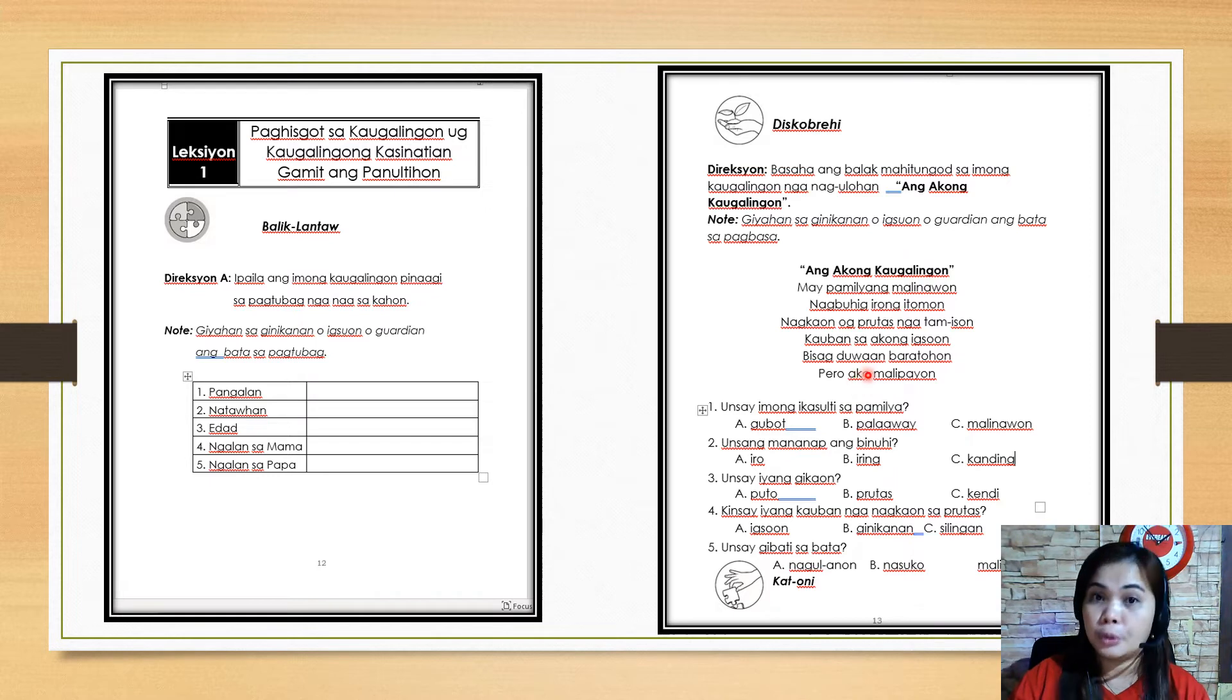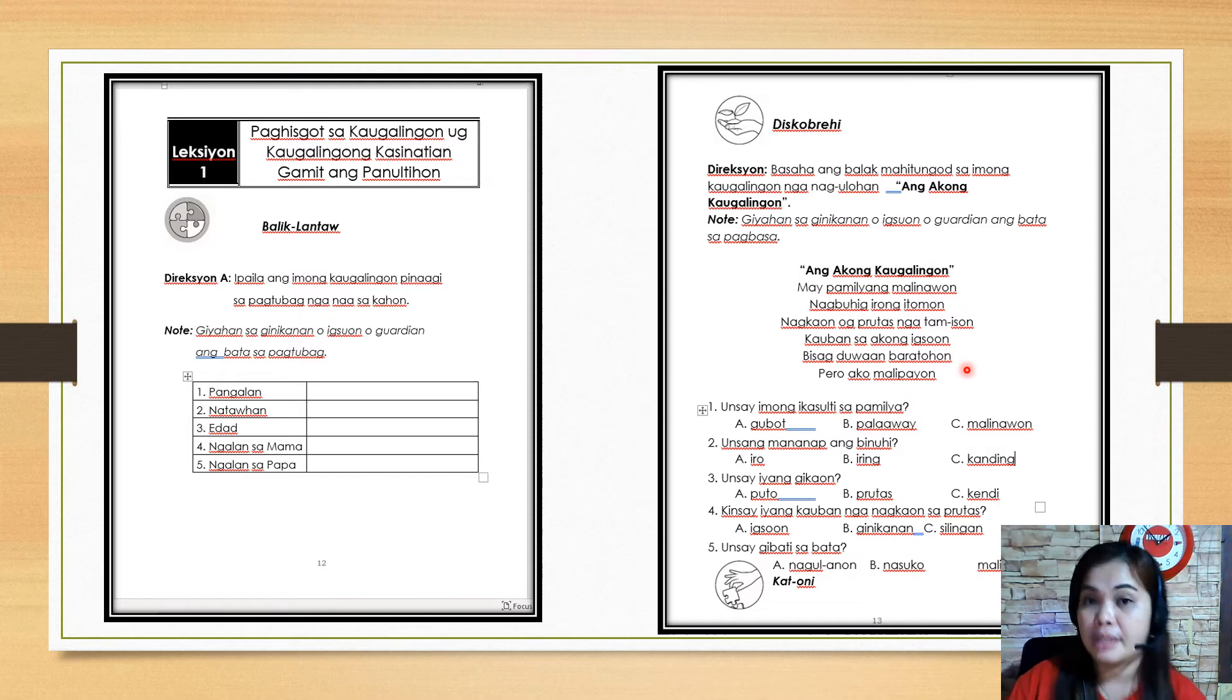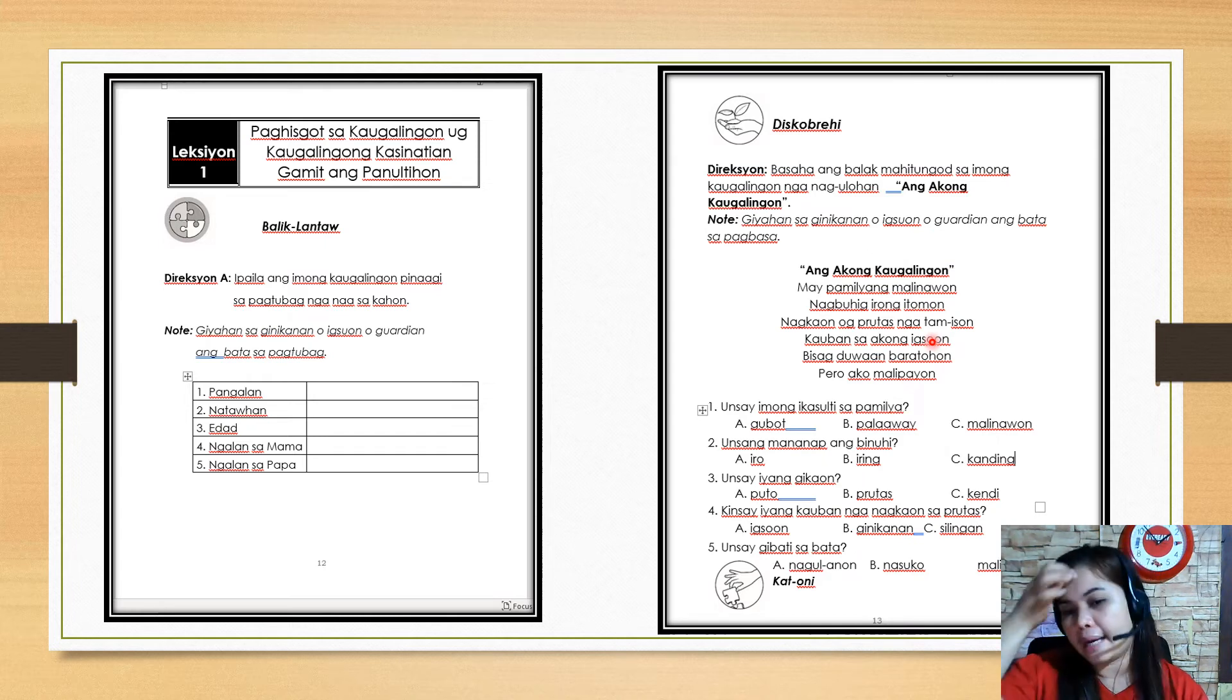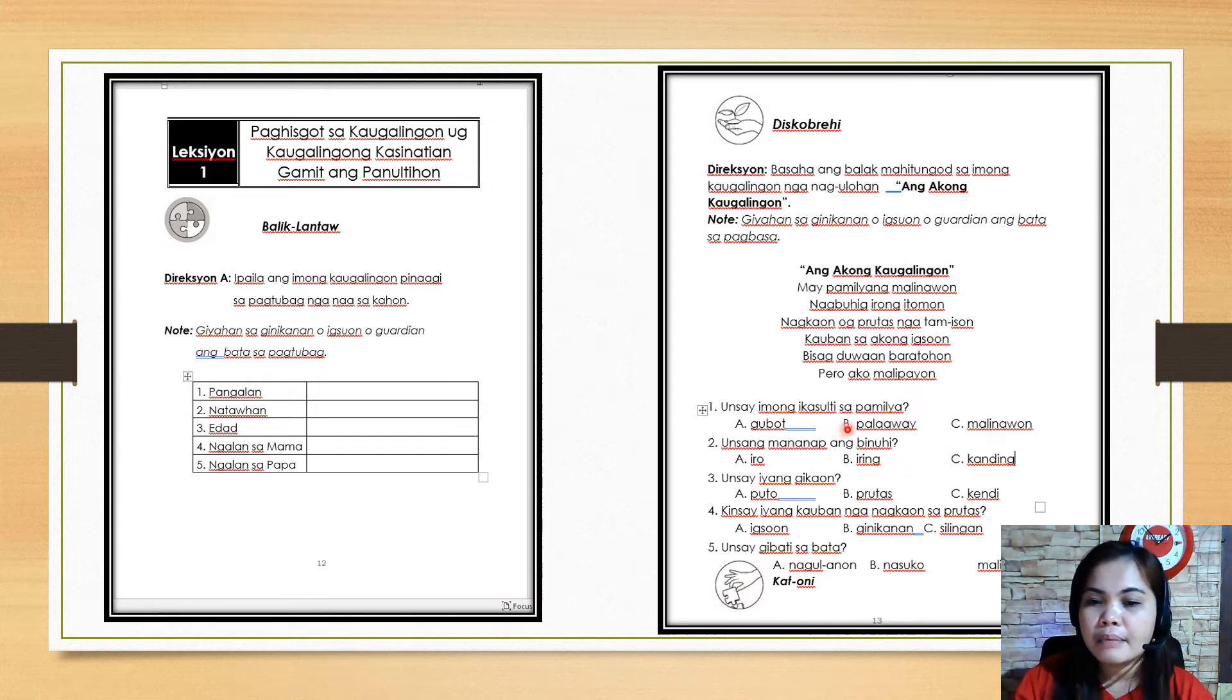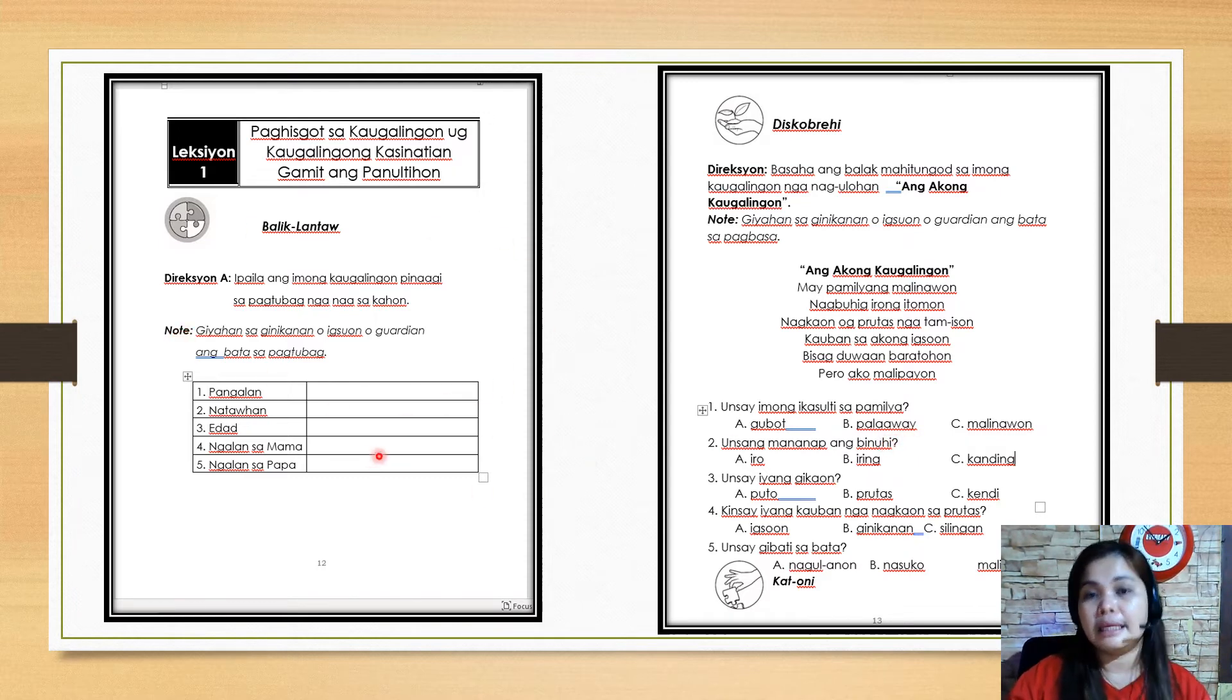Kauban sa akong igsuon: the dog is eating a sweet fruit with my sibling. Bisagduwaan baratuhon: even though our toy is not costly or not expensive. Pero ako malipayon: but I am happy. That's the translation of this poem. Now let's move on to number one. What can you say about the family in the poem? A: gubot or chaotic. Letter B: palaaway or they always fight each other. Letter C: malinawon or peaceful. Just encircle your correct answer.